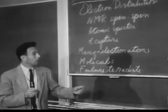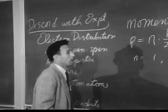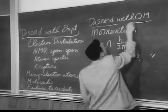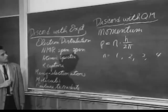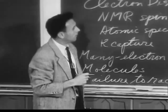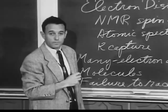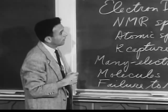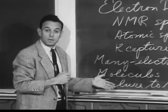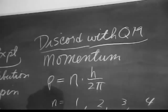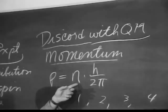Now I want to pass from this discord with experiment to discord with quantum mechanics. Here we are not making as fundamental a criticism of the planetary model. The only reason we would regard this type of discord as a very serious matter is because the quantum mechanical model proves to be very effective in explaining these experimental facts. Since quantum mechanics is successful in explaining these areas of failure of the planetary model, it becomes interesting to us that the planetary model is in fundamental discord with quantum mechanics.